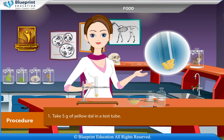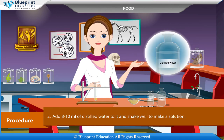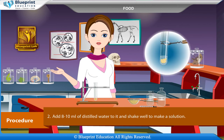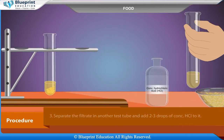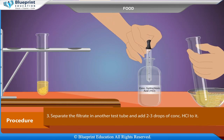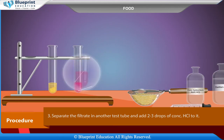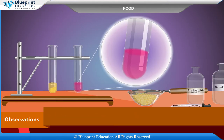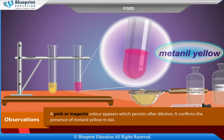Procedure: Take 5 grams of yellow dal in a test tube. Add 8 to 10 ml of distilled water to it and shake well to make a solution. Separate the filtrate into another test tube and add 2 to 3 drops of concentrated HCl to it.